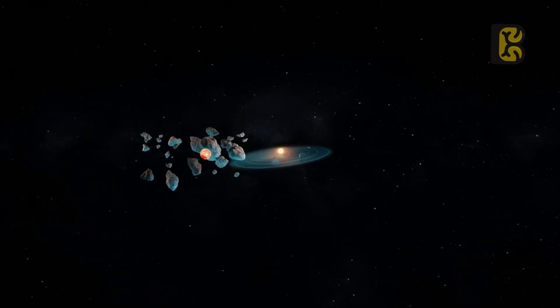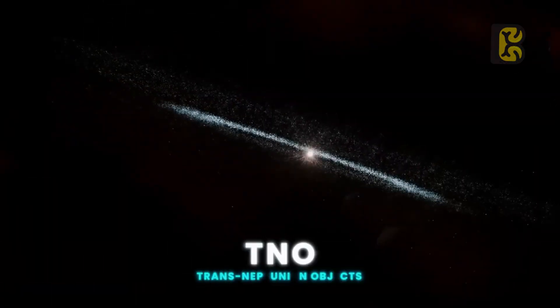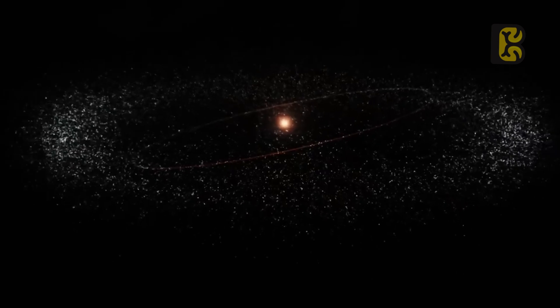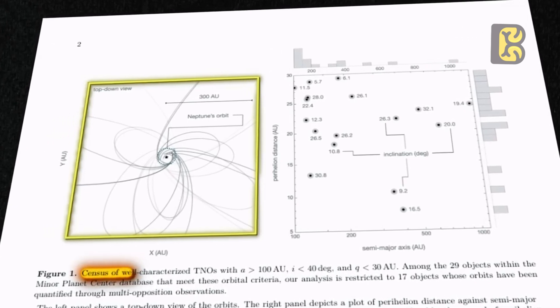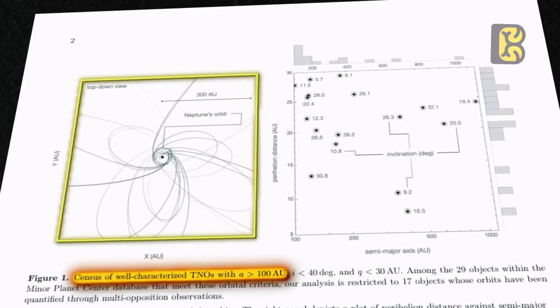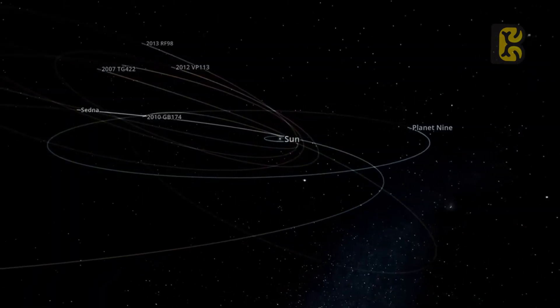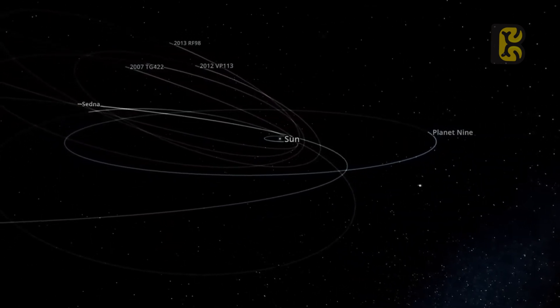Even if we assume that a passing star pushed 10 to 12 objects into such strange orbits, as the years passed and technology advanced, the number of anomalies increased. In a research paper published on April 18, 2024, when the latest data on the anomalies of trans-Neptunian objects was analyzed, two simulation graphs were presented.